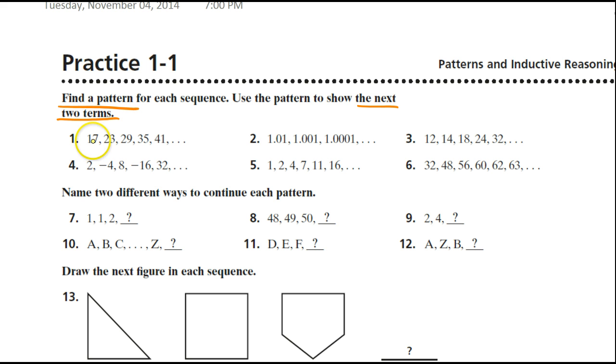How do I get from 17 to 23? Let's see, add 6. Then from 23 to 29, that's also adding 6. And from 29 to 35, that's adding 6. And from 35 to 41, again with the adding 6. So the pattern is add 6, and that gives you your next term. The next two terms will be 47 and 53.